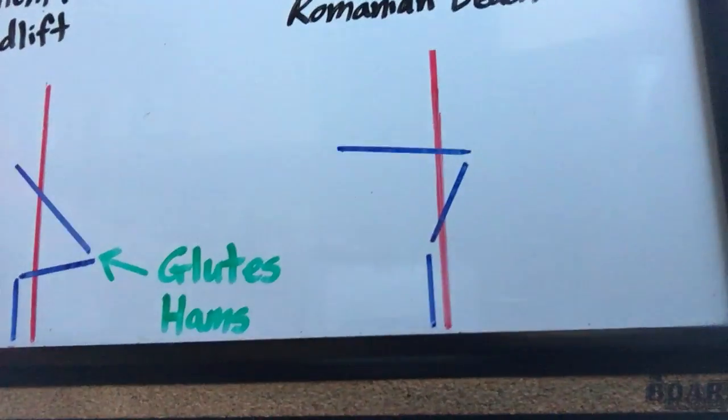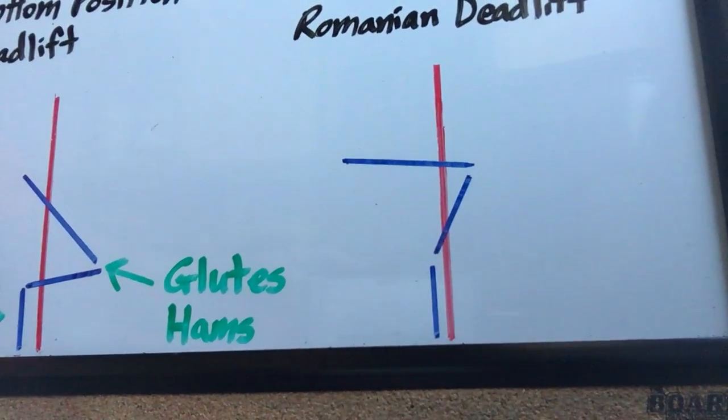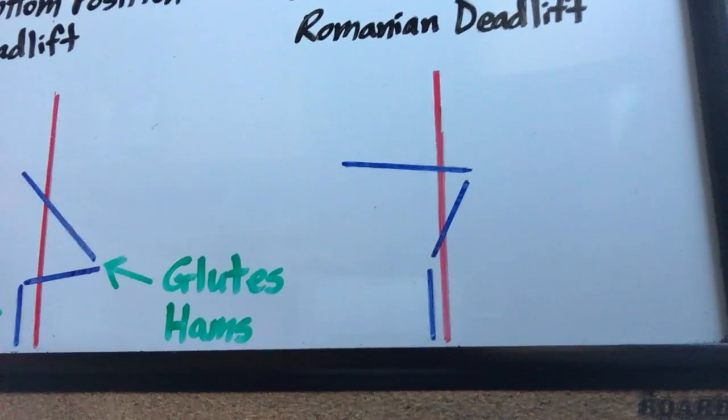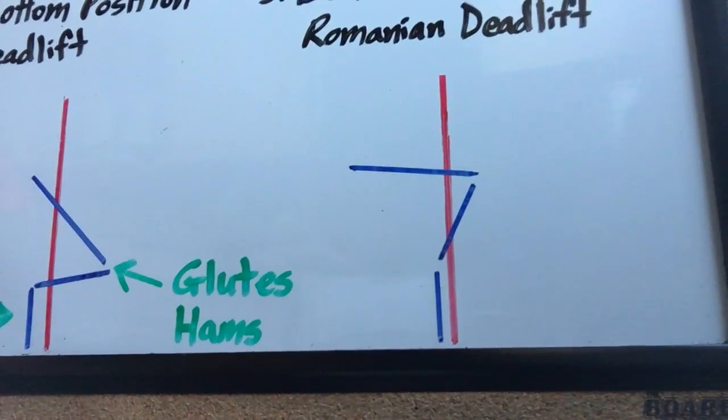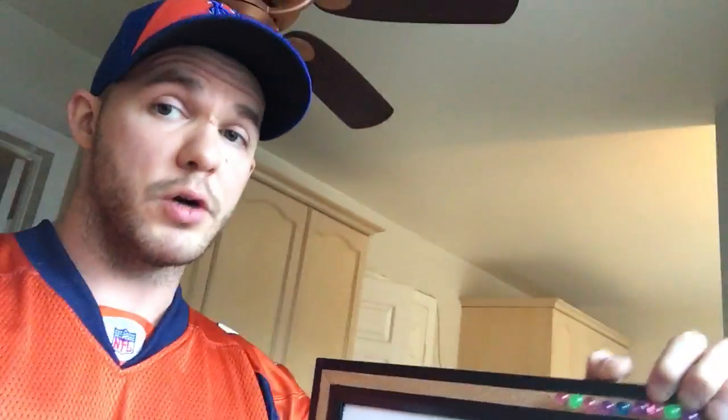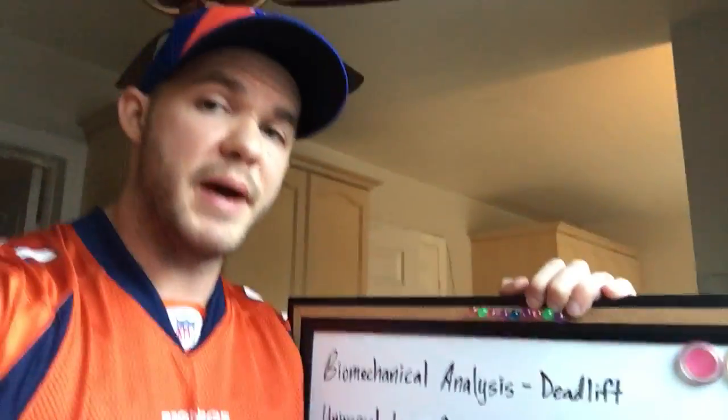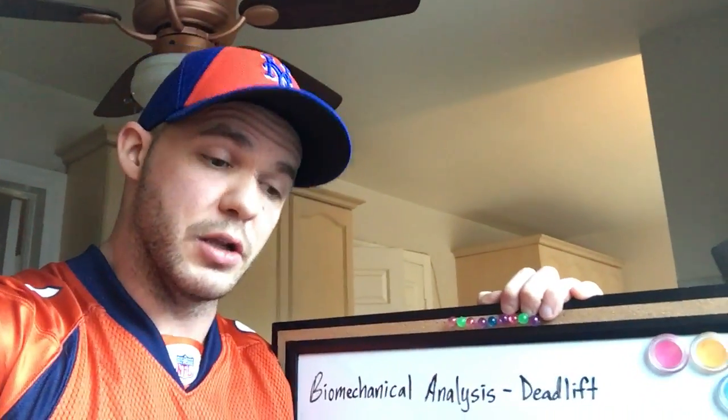The difference, however, is in the Romanian deadlift, there's not much bending at the knee. So while we bend at the hip and we lengthen the hamstring at the hip, we don't shorten it at the knee. And therefore, it's in a much longer relative position and its capacity to produce force is lower.